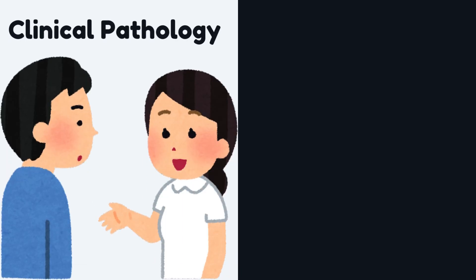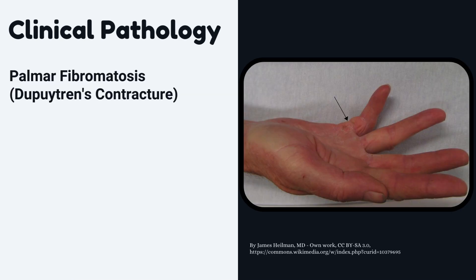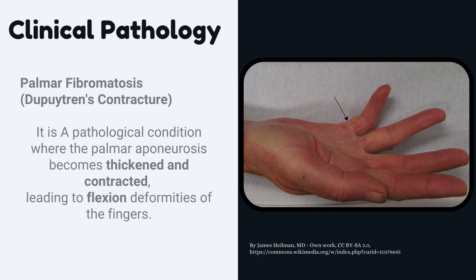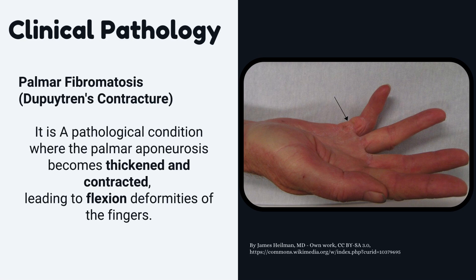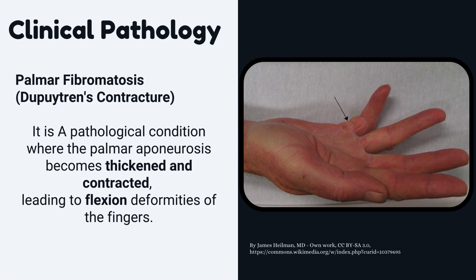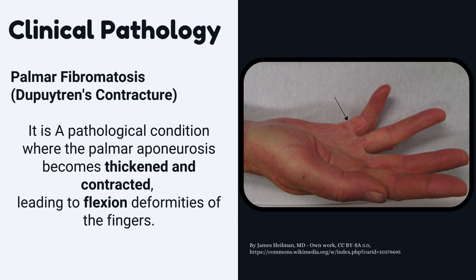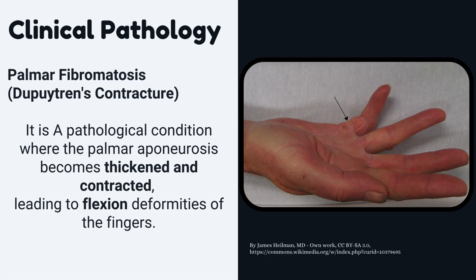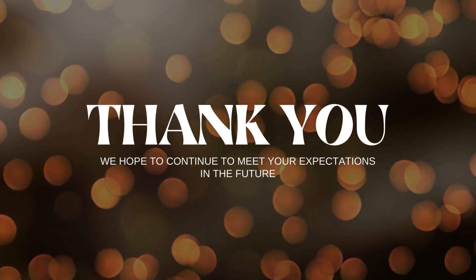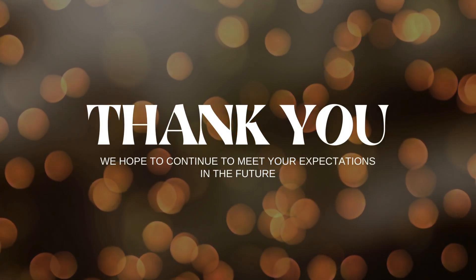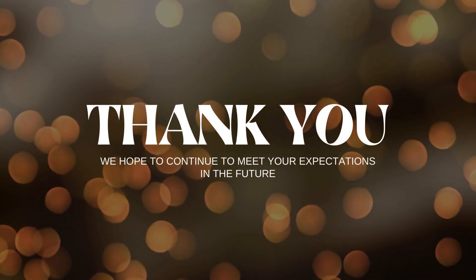There is a pathological condition called palmar fibromatosis, also known as Dupuytren's contracture. It is a pathological condition where the palmar aponeurosis becomes thickened and contracted, leading to flexion deformities of the fingers.